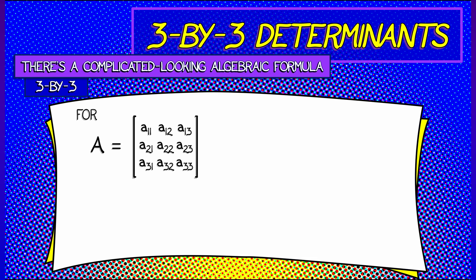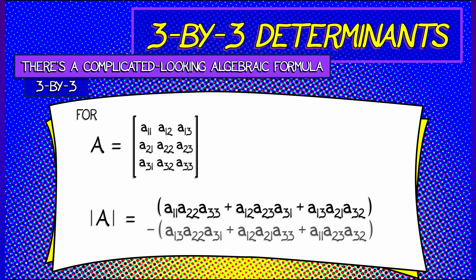There's a very complicated and frightening-looking algebraic formula for the determinant of A that is given as A-1-1 times A-2-2 times A-3-3 plus A-1-2, A-2-3, A-3-1 plus A-1-3, A-2-1, A-3-2 minus A-1-3, A-2-2, A-3. Oh gosh, I can't keep going. There's the formula.